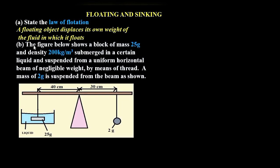Part B of the question: the figure below shows a block of mass 25 grams and density 200 kilograms per cubic meter, submerged in a certain liquid and suspended from a uniform horizontal beam of negligible weight by means of a thread. A mass of 2 grams is suspended from the beam as shown in the diagram.